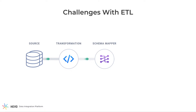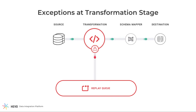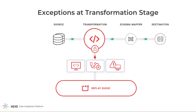The schema mapper is where the incoming event is mapped to a destination table. Once the event is mapped, it's ingested into the destination table. Now let's see what could possibly go wrong in this process. At the transformation stage, your transformation code can have various kinds of errors, like interpretation errors, logical errors, or type errors. Events will be moved to the Replay Queue when such exceptions arise.